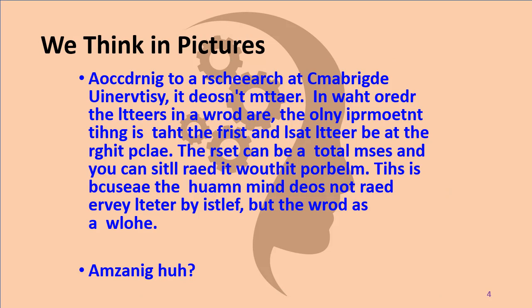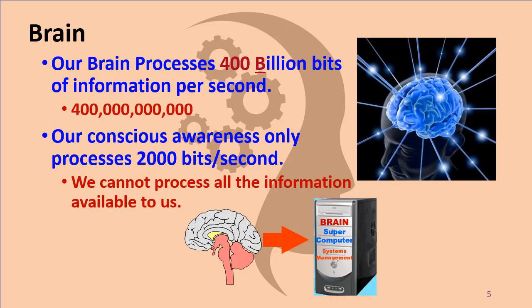Read this sentence. Were you able to read it? One reason is because we think in pictures — we see the word as a whole and we don't look at the mistakes. This is another reason you need to proofread your papers before you turn them in. So this computer, our brain, processes 400 billion bits of information per second. Our conscious awareness can only process 2,000 bits per second.